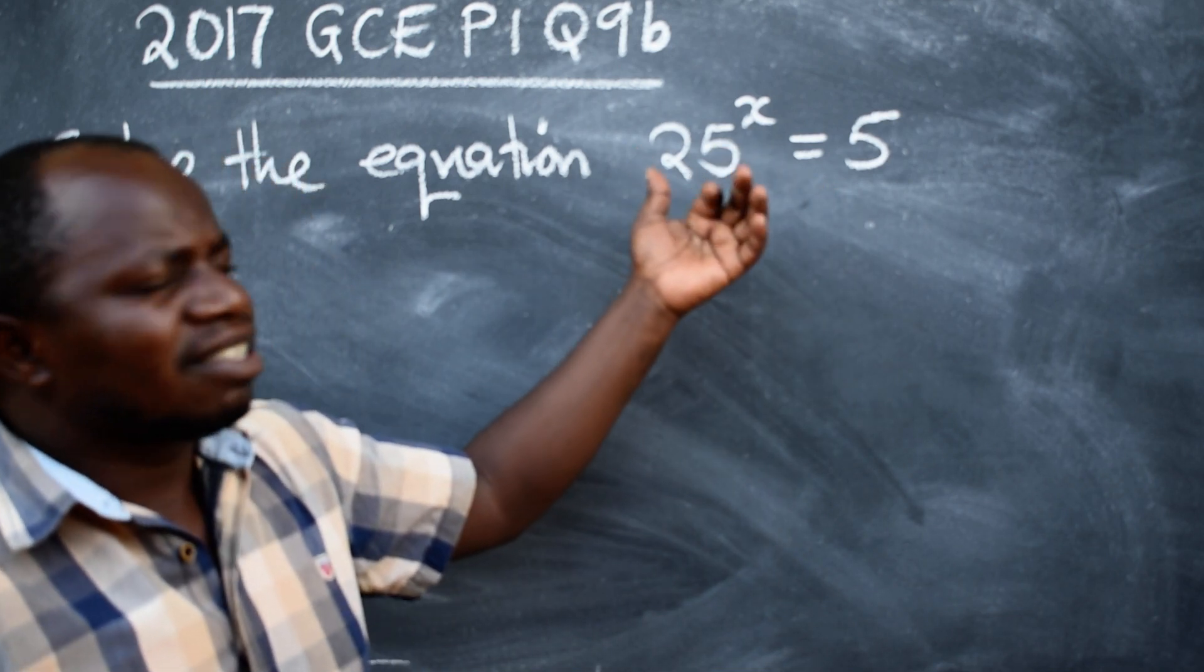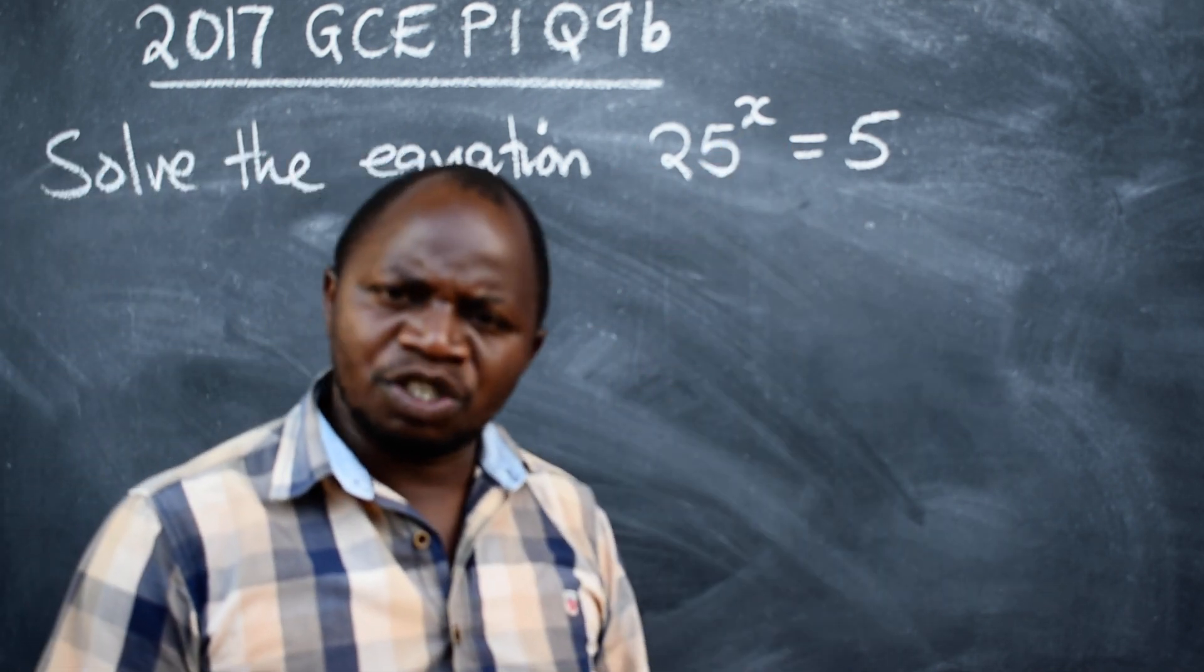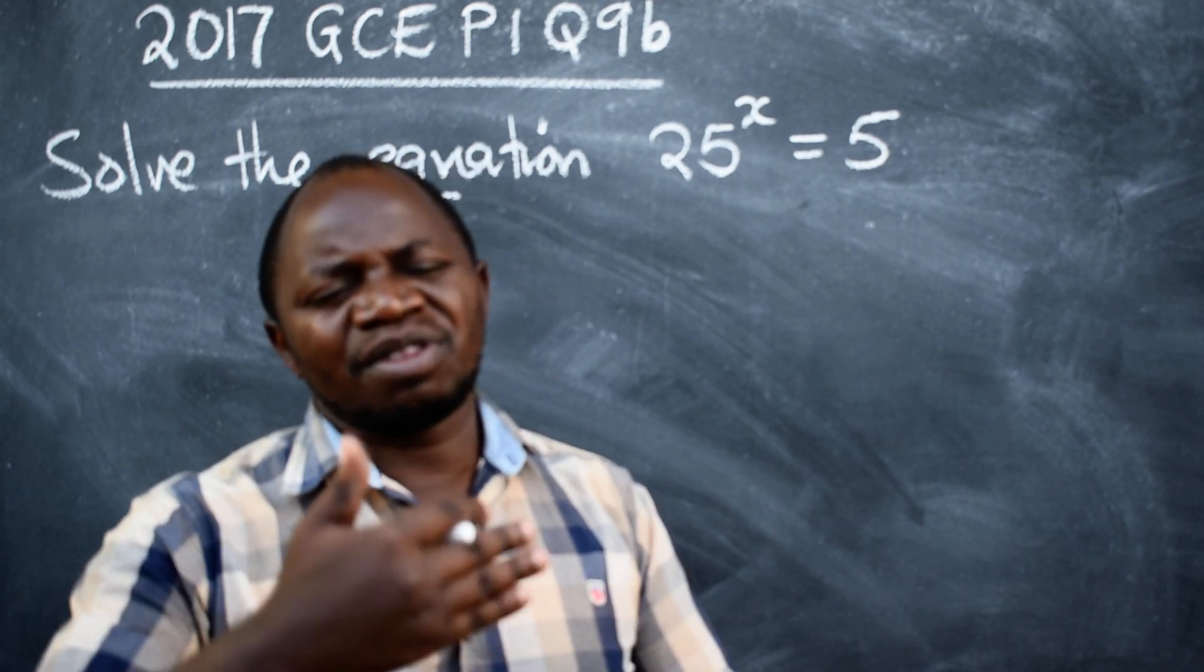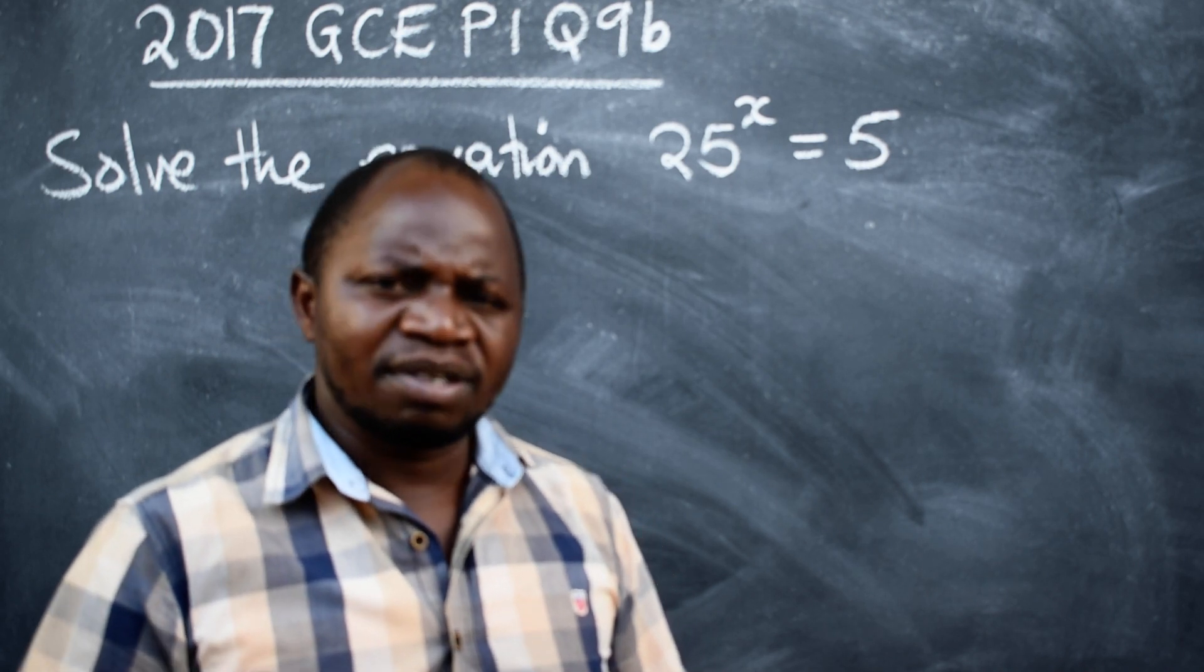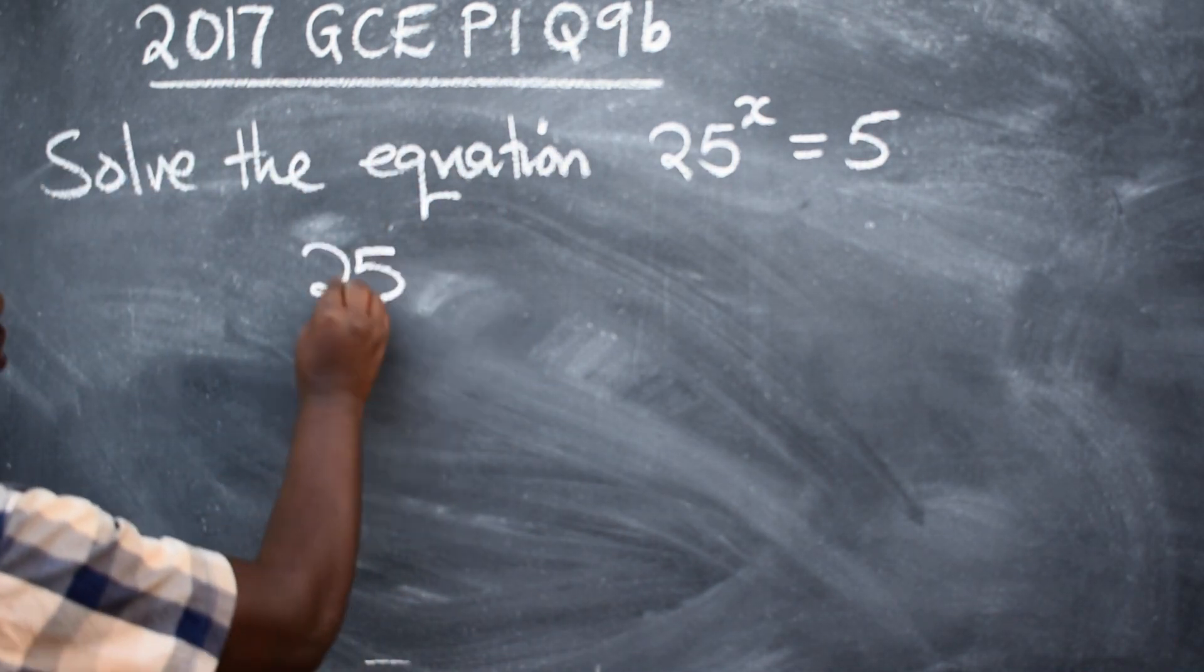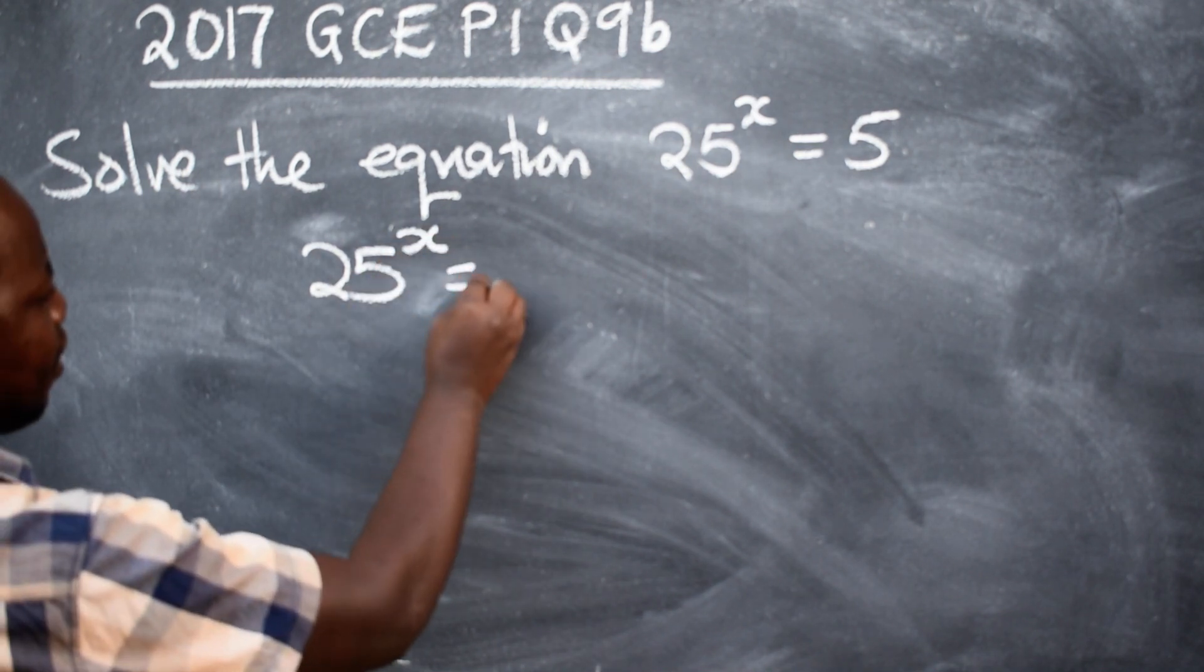This is an example of an exponential equation. The moment you identify the type, it will be easy for you to cut out the steps for that equation. Let's start. 25 raised to the power x is equal to 5.